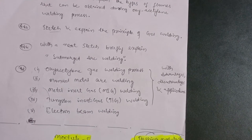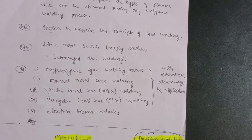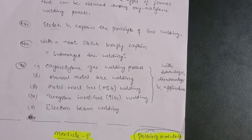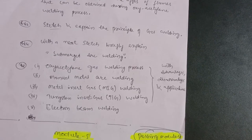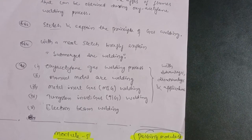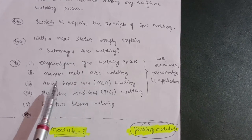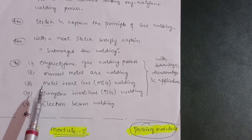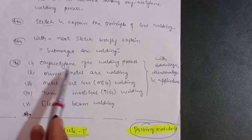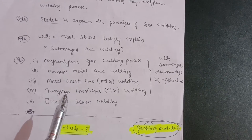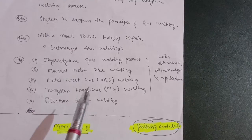Focus on diagrams and neat sketches in the examination rather than extensive theory — the first diagram should be neat and clean; the theory in subsequent paragraphs is of least importance. Try to understand these concepts. Animation videos are also available for these welding processes on YouTube — two-minute videos that give clarity about the working principle of these welding processes.